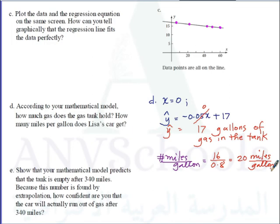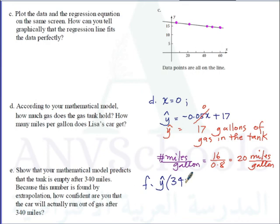Letter E/F: Show that the mathematical model predicts the tank is empty after 340 miles. Computing y-hat when x equals 340: negative 0.05 times 340 plus 17 equals 0. So the model predicts zero gallons remaining at 340 miles.